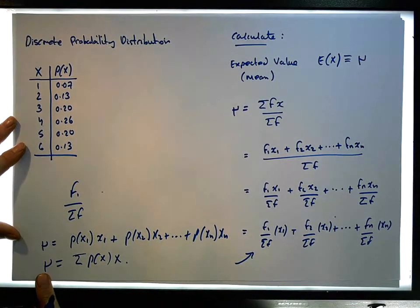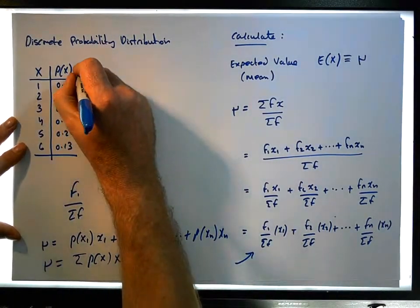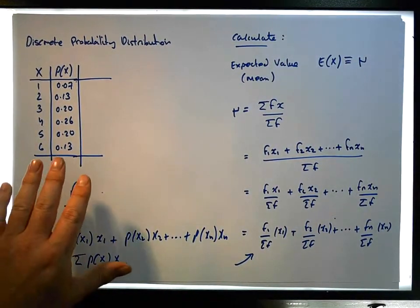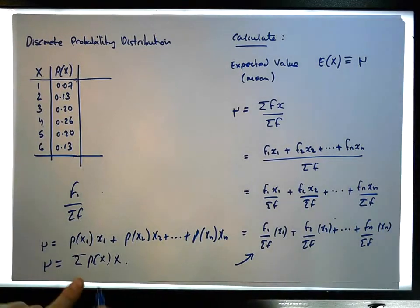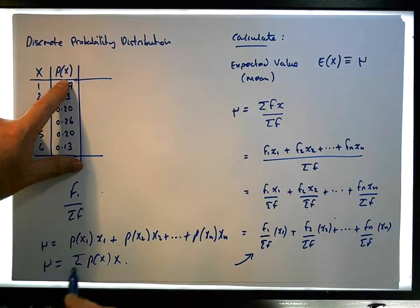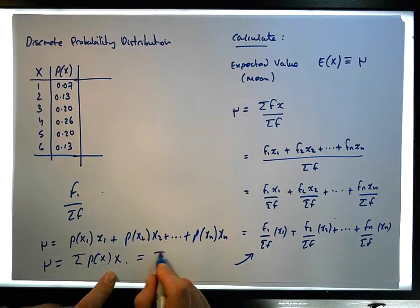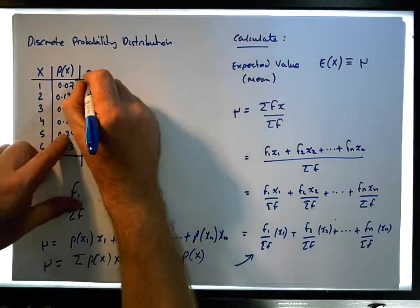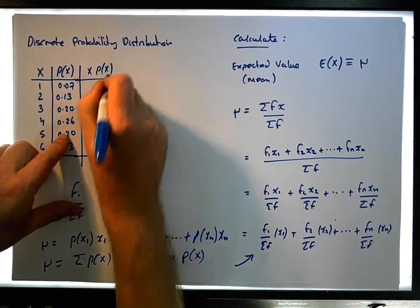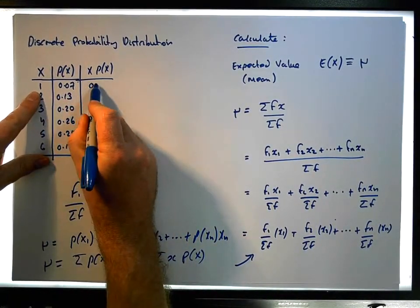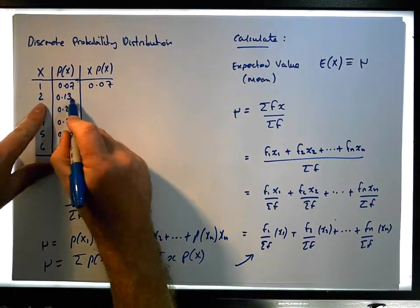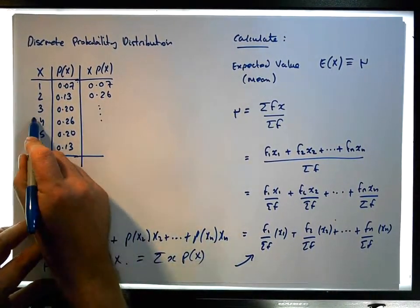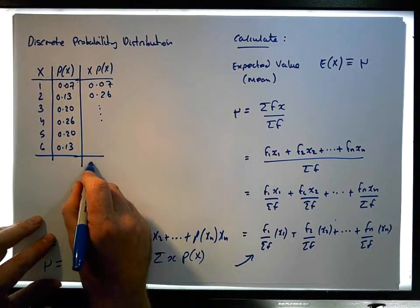To calculate the expected value — the mean of the probability distribution — we multiply each x by its probability, just as we would with a discrete frequency distribution. This is commutative, so it can be written as the sum of x times P(x). For example: 1 × 0.07 = 0.07, 2 × 0.13 = 0.26, and so on. Then we sum up the column.